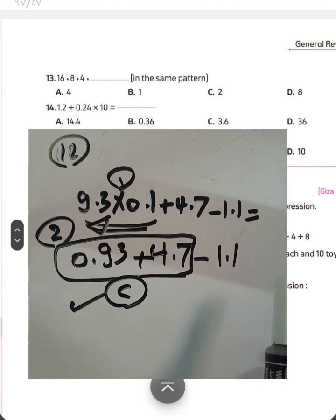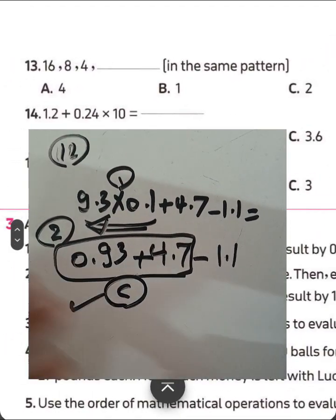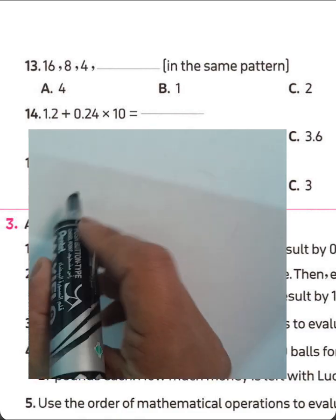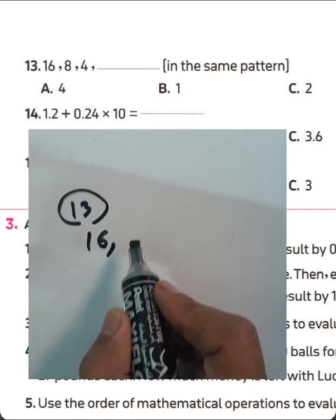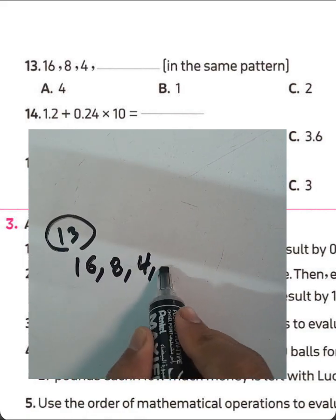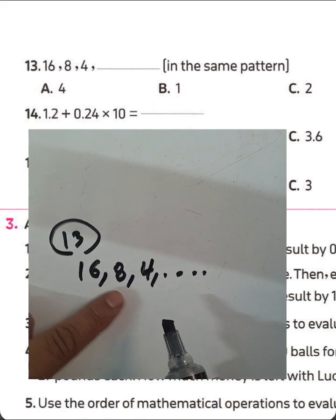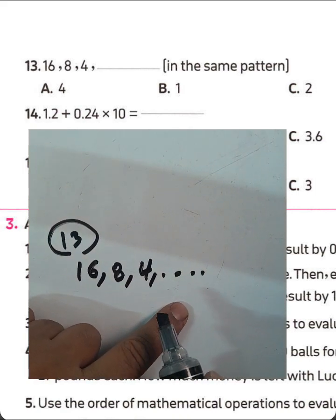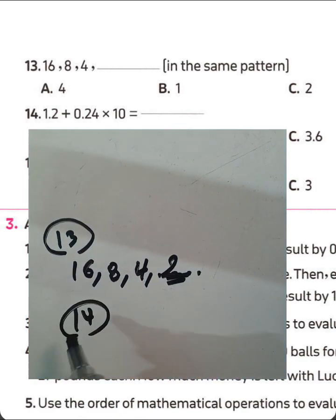Question 13. Pattern: 16, 8, 4, and so on. 16 divided by 2 equals 8, 8 divided by 2 equals 4, 4 divided by 2 equals 2. Write 2 here.